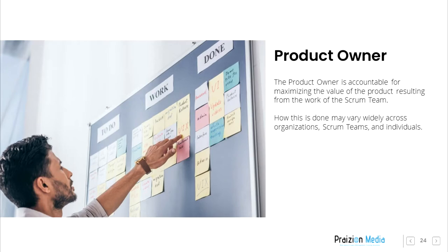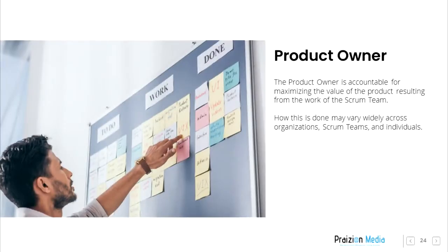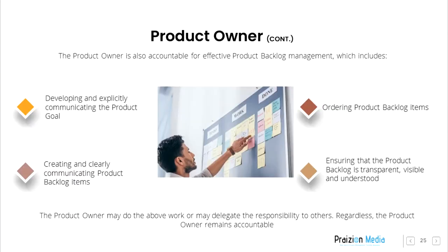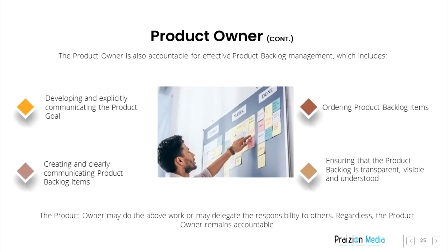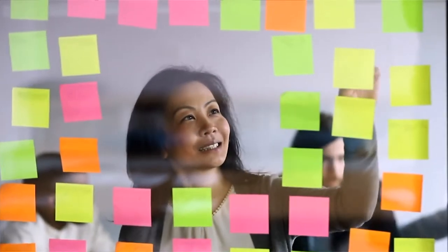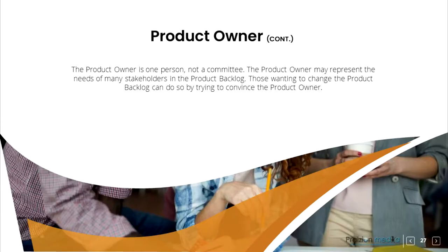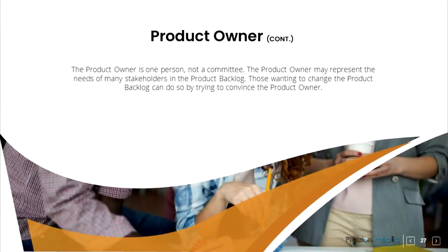Product Owner. The Product Owner is accountable for maximizing the value of the product resulting from the work of the Scrum Team. How this is done may vary widely across organizations, Scrum Teams, and individuals. The Product Owner is accountable for effective product backlog management, which includes developing and explicitly communicating the product goal, creating and clearly communicating product backlog items, ordering product backlog items, and ensuring that the product backlog is transparent, visible, and understood. The Product Owner may do the above work or may delegate the responsibility to others. Regardless, the Product Owner remains accountable. For Product Owners to succeed, the entire organization must respect their decisions. These decisions are visible in the content and ordering of the product backlog and through the inspectable increment at the Sprint Review. The Product Owner is one person, not a committee. The Product Owner may represent the needs of many stakeholders in the product backlog. Those wanting to change the product backlog can do so by trying to convince the Product Owner.